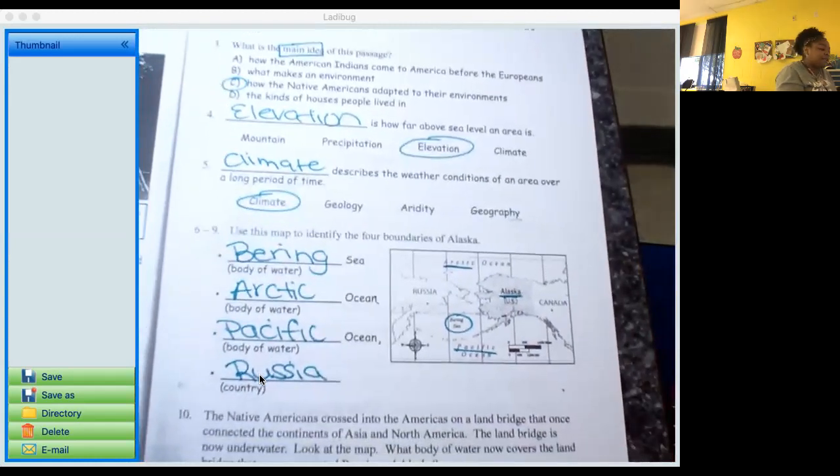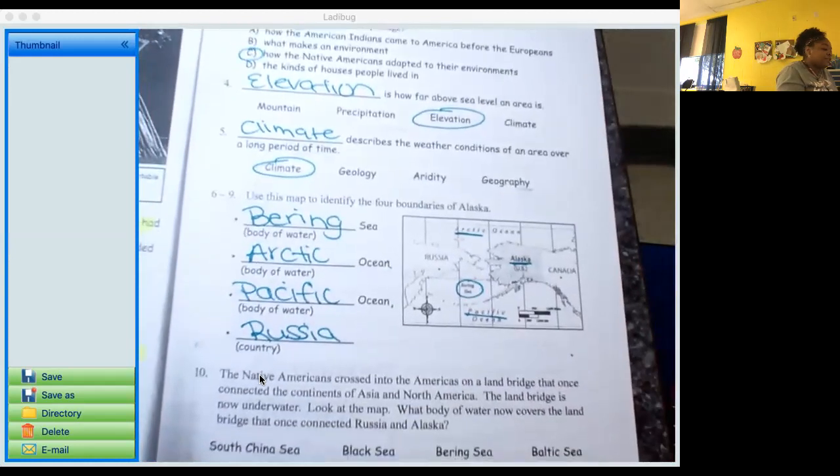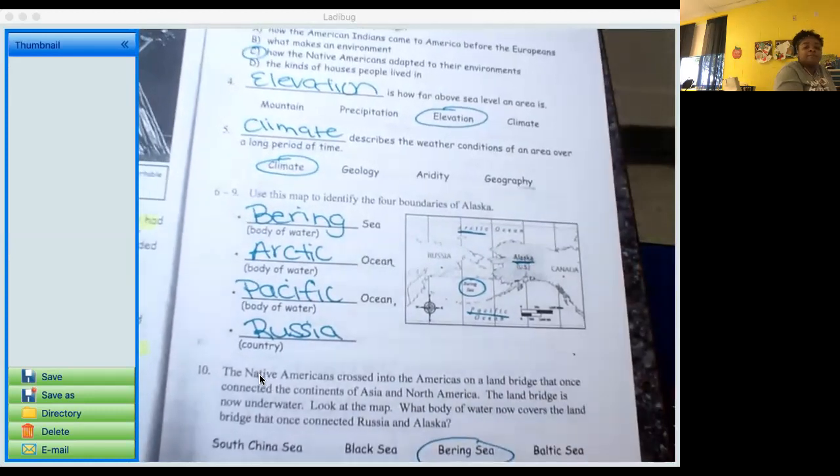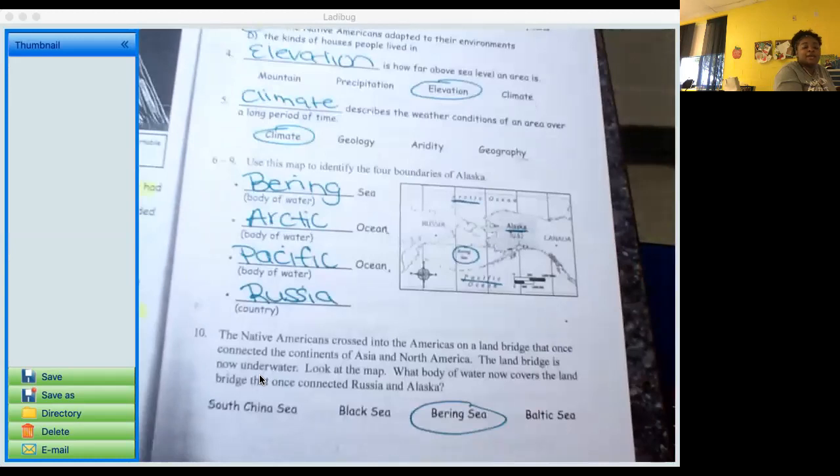Alright, and number 10. The Native Americans crossed into the Americas on a land bridge that once connected the continent of Asia and North America. The land bridge is now underwater. Look at the map. What body of water now covers the land bridge that once connected Russia and Alaska? I know that this land bridge was covered by the Bering Sea. Alright, so for number 10 you should have Bering Sea.